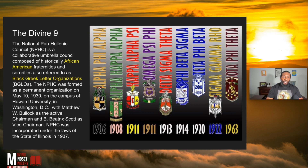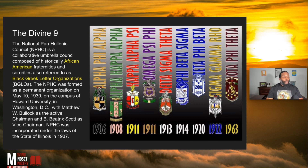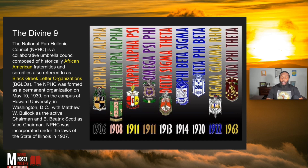The NPHC was founded as a permanent organization on May 10th, 1930, on the campus of Howard University in Washington, D.C., with Matthew W. Bullock as active chairman and Beatrix Scott as vice chairman. These organizations are at every HBCU. There's a lot of hazing and people doing things that aren't biblical — associating with acts clearly forbidden in scripture. We're going through this history timeline so you can see the connections to understand why you call yourself Black and how they tie into the Age of Enlightenment.